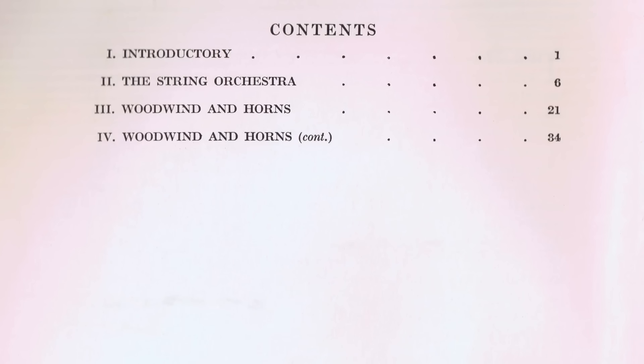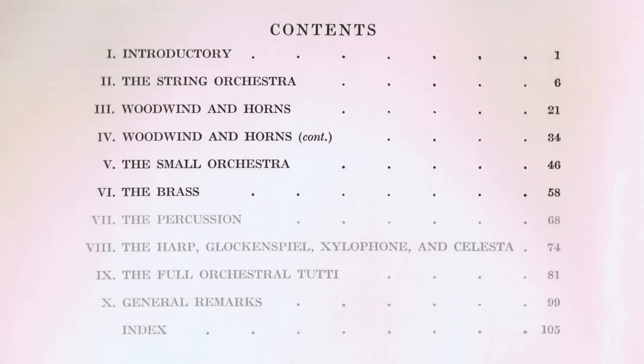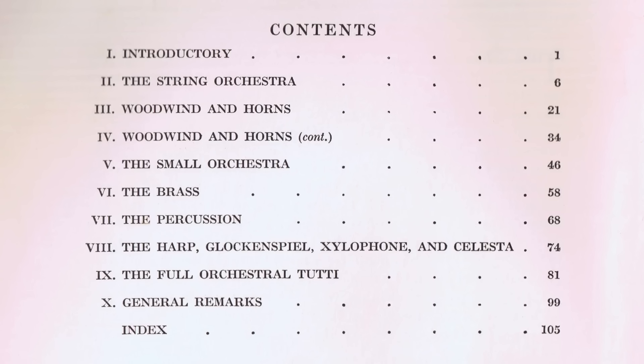From here, Jacob introduces each section of the orchestra progressively for the course-building instructor: first strings, then a couple of chapters on winds and horns, then the small orchestra followed by the brass, and so on. Along the way, Jacob presents the reader with ever more intense challenges to their developing craft, from coloristic concerns to more sweeping arrangements to fiendishly tricky assignments, including using the least amount of harp pedal changes.